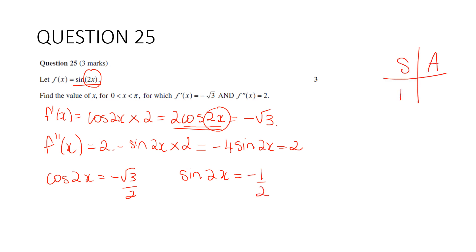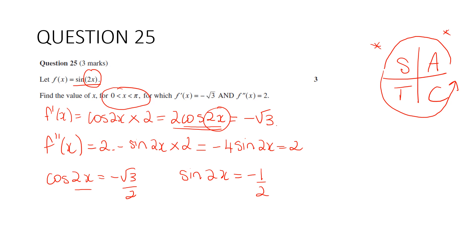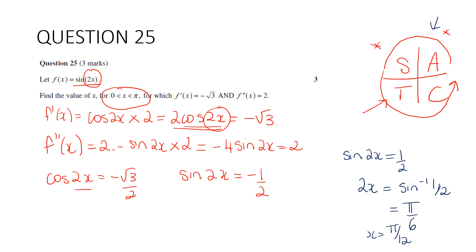Both cosine and sine are negative, which puts us in the third quadrant. The reference angle comes from sin(2x) = 1/2, giving 2x = arcsin(1/2) = π/6, so x = π/12. Since we want the third quadrant, the angle is π + π/12, so x = 13π/12. Therefore our answer is x = 7π/12.